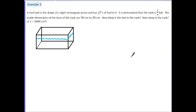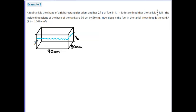Now I can fill in the elements I know. The inside dimensions of the base are 90 centimeters and 50 centimeters. What I don't know is how deep the fuel is — that's the current height from the base to the fuel surface. Let's label that H sub C. They also ask how deep the tank is — the total height — so let's call that H sub A, representing the actual height of the tank.